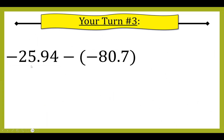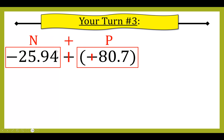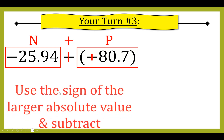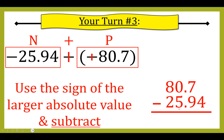For your turn number three: negative 25.94 minus negative 80.7. Since it's a subtraction problem, I add the opposite — it becomes addition and negative 80.7 becomes positive. I box my numbers: negative 25.94 and positive 80.7 — a negative plus a positive. I'll use the sign of the larger absolute value and subtract, so I line up 80.7 minus 25.94 and fill in my zero.